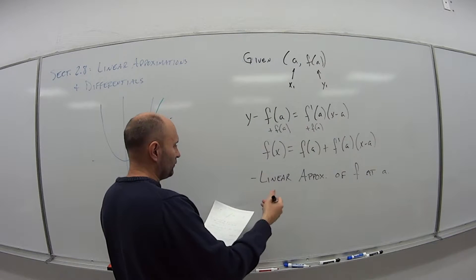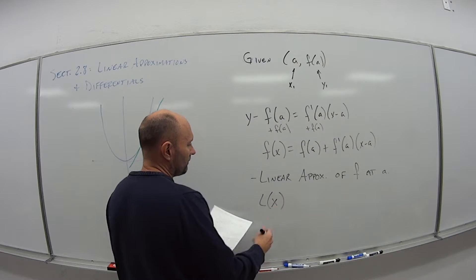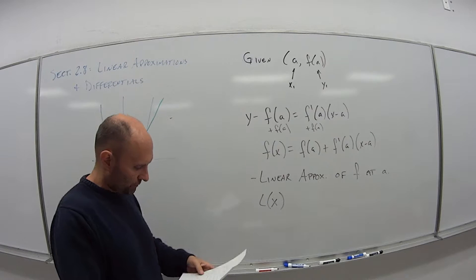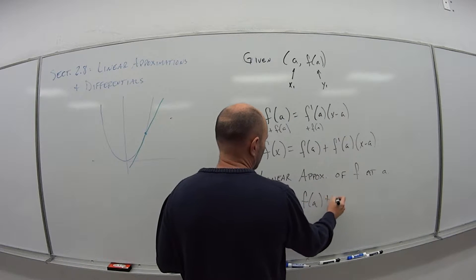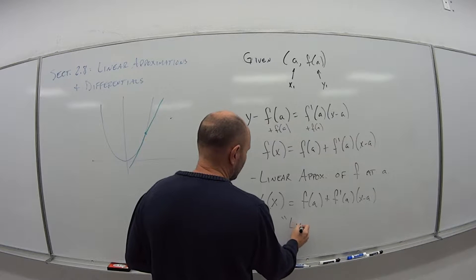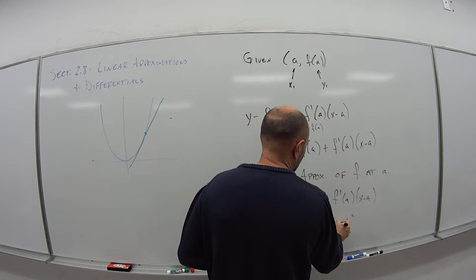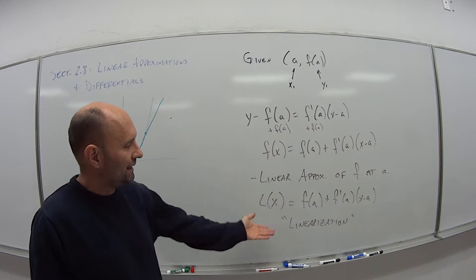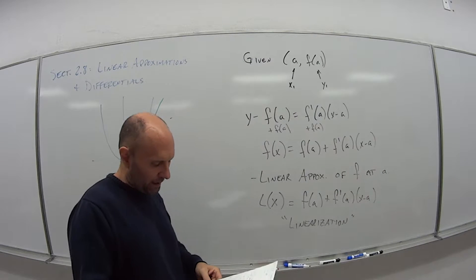We also have what's known as the linearization — we just change f(x) to L(x). This indicates that my linear approximation and my linearization of the function are the same thing: f(A) plus f′(A) times (x minus A). It could be asked in a couple of different ways — what's the linear approximation or what's the linearization — same idea: f(A) plus f′(A) times (x minus A).